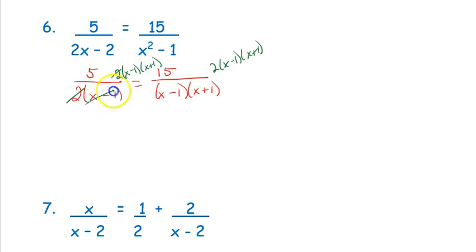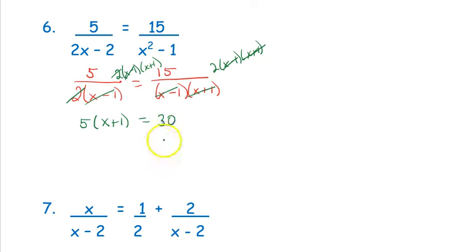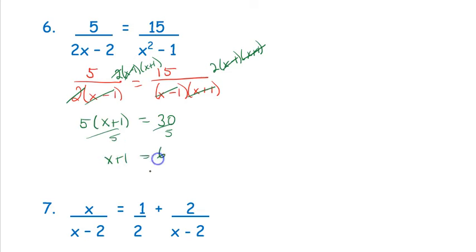I cancel the 2's and the (x − 1)'s, leaving 5 times (x + 1). I cancel the (x − 1) and (x + 1), leaving 15 times 2. Instead of distributing the 5, I can divide by it directly, giving x + 1 = 6. Then I subtract 1 and x = 5. Plugging 5 into either denominator does not give zero, so 5 is a valid answer.